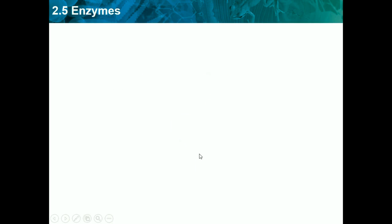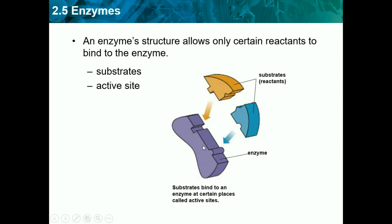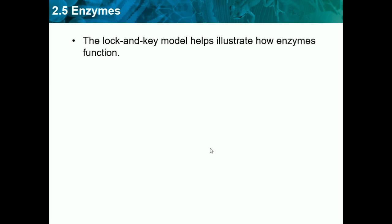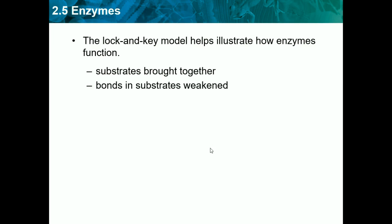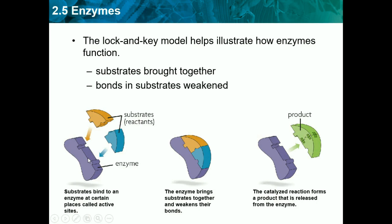This enzyme can only bond these two substrates because they fit into certain key holes. The lock-and-key model helps illustrate how enzymes function. Substrates are brought together, they bond in the active sites, and the bonds in the substrates weaken. The substrates bond together in the active sites, their bonds are weakened and brought together, and then they're sent out in one whole piece. The catalyzed reaction forms a product that is released from the enzyme.